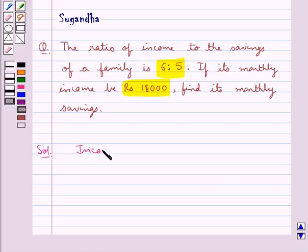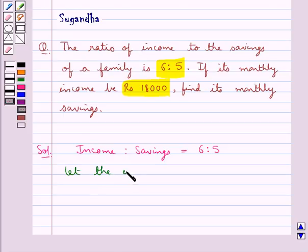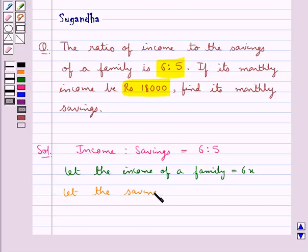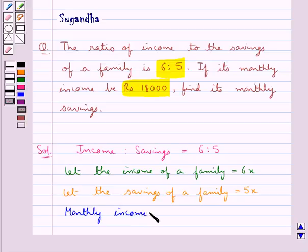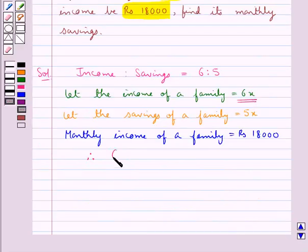We are given the ratio of income to the savings of a family is 6 is to 5. So we take: let the income of a family be equal to 6x, and also let the savings of a family be equal to 5x. It's given that the monthly income of a family is equal to rupees 18,000, so this means that 6x is equal to 18,000, that is x would be equal to 18,000 upon 6.